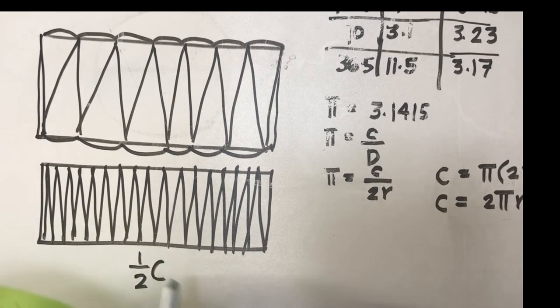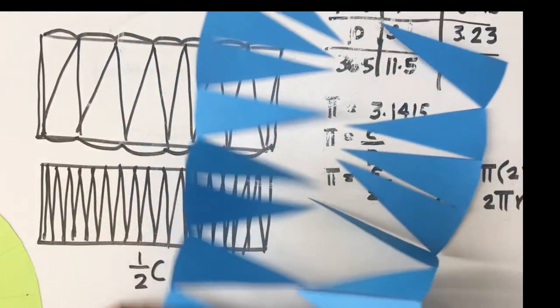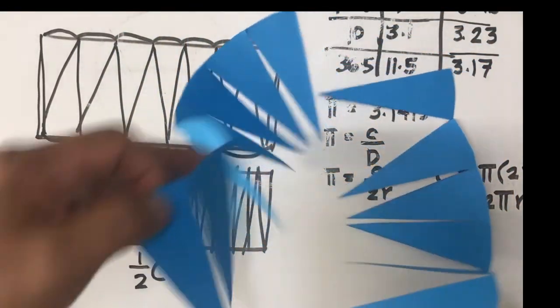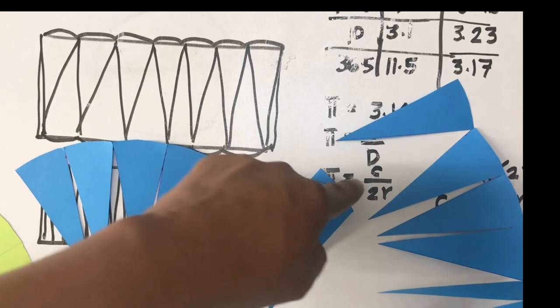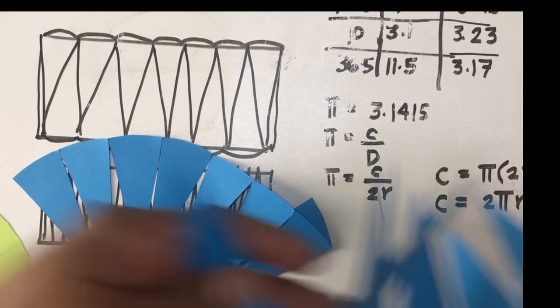And where is the other half? It's here. So you have these two—this is one half circumference at the top and the other half would be at the bottom.